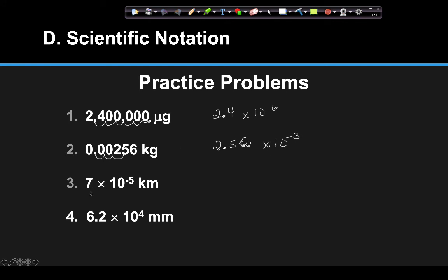Now let's convert from scientific notation back to expanded form. If you have a negative exponent, move the decimal point in front of the number — so for 7 times 10 to the negative fifth, place a seven after the decimal, then move the point five times using zeros as placeholders. Remember: the five doesn't mean five zeros, it means you moved the decimal point five times. For a positive exponent like 6.2 times 10 to the fourth, move it four places and use zeros as placeholders — that gives you 62,000.